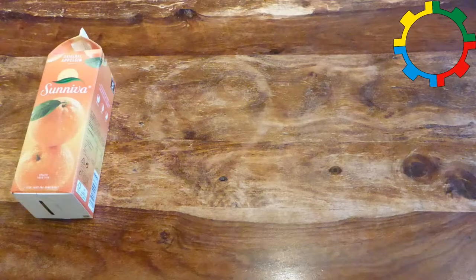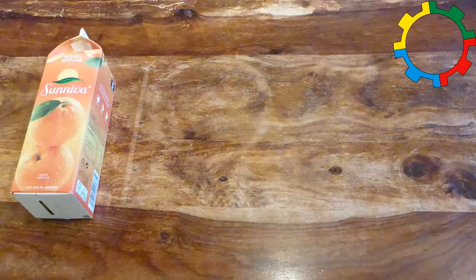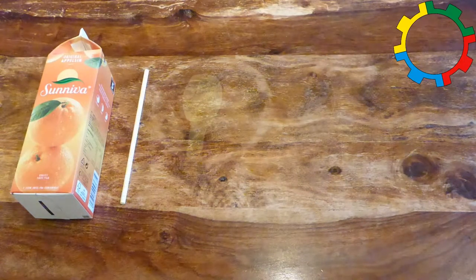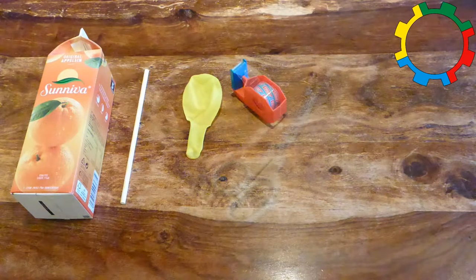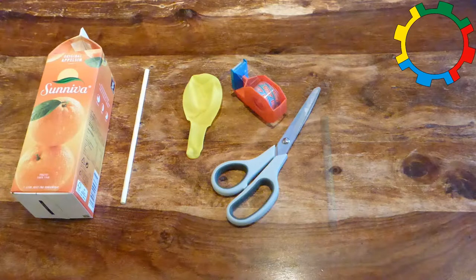For the boat you need one standard one-liter milk or juice carton, one paper straw, one toy balloon, cello tape or other sticky tape, a pair of scissors, a marker pen, and a ruler.